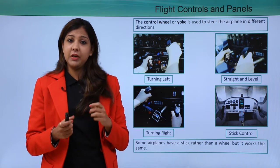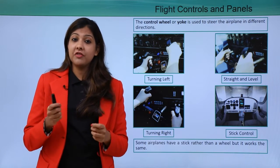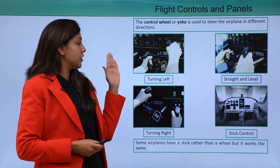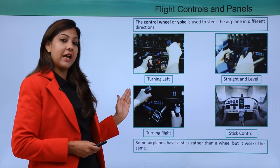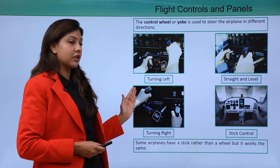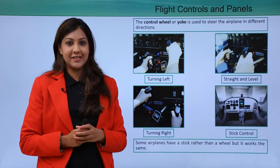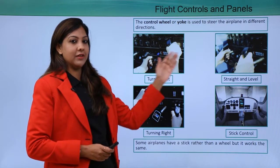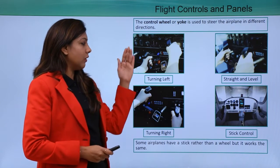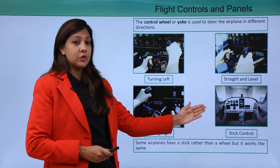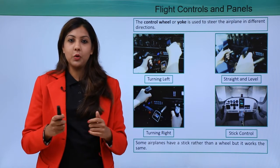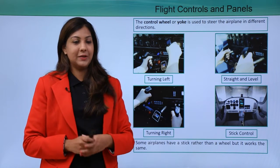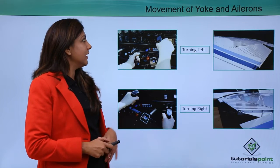The yoke or control wheel is used by the cockpit crew to steer the airplane in different directions. If the pilot wants to shift the aircraft to the left, he'll turn the yoke towards the left. Likewise, if he wants to turn right, he will turn the yoke towards the right. To maintain the aircraft in a straight line, he keeps it in a normal position. Some aircraft have a stick control rather than a yoke, but it operates in just the same way.